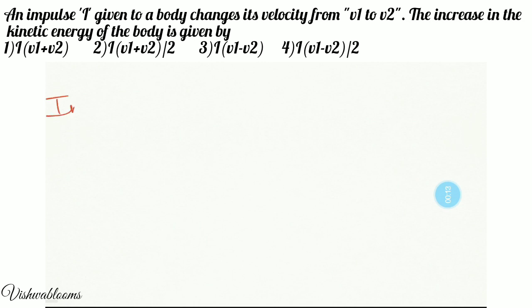So we are given the impulse of the body as I, and they have told that velocity changes from V1 to V2. So initially it is V1 and finally it is V2. And we are asked to find out the change in kinetic energy. This is what we have to find. So let us do this.